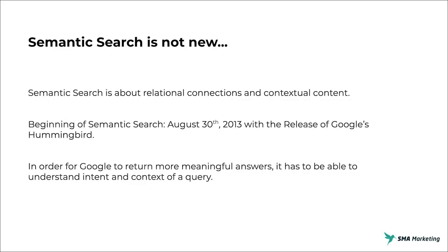Semantic search is not new — it's actually been around since about 2013 with the release of Hummingbird. This was Google's first attempt to really return more meaningful answers and begin to understand intent in the context of a query. It's about creating those relational connections in context, and Hummingbird was a rebuild of Google's base engine that drives search.